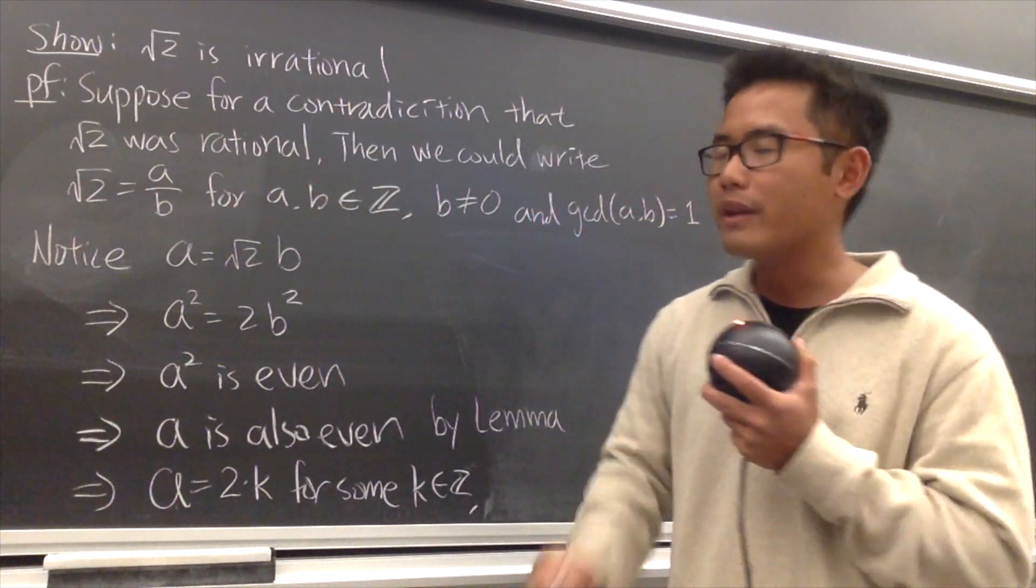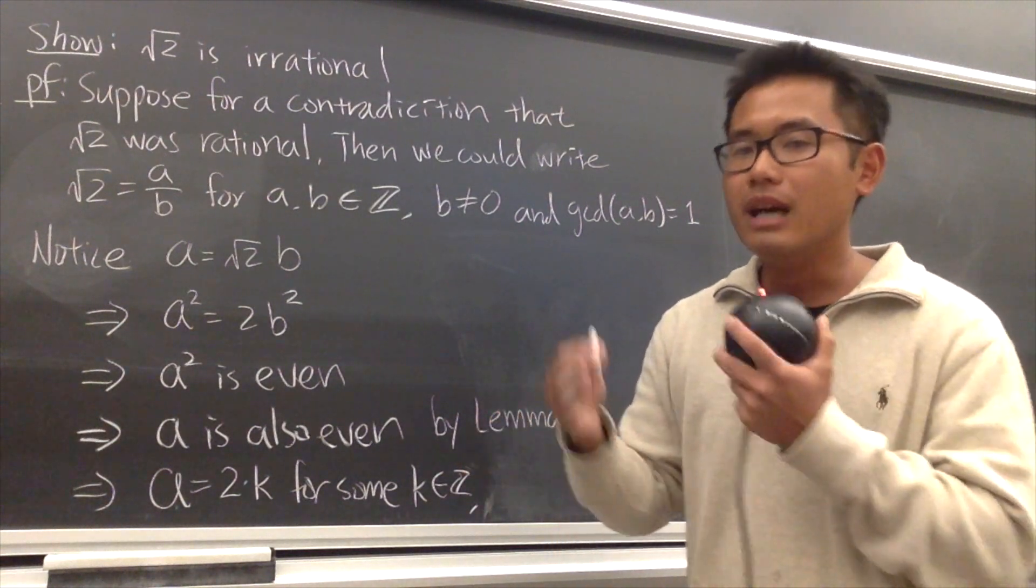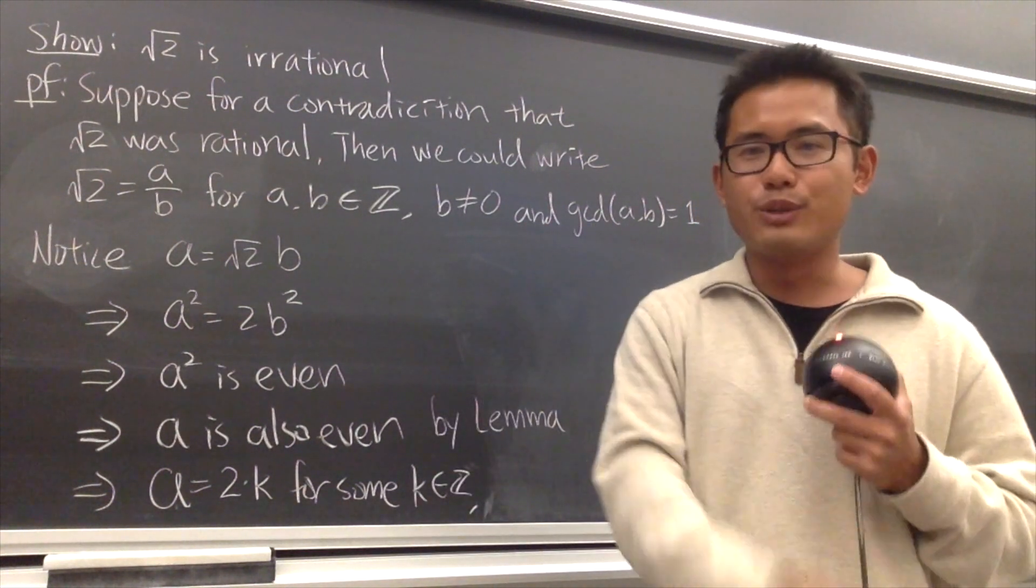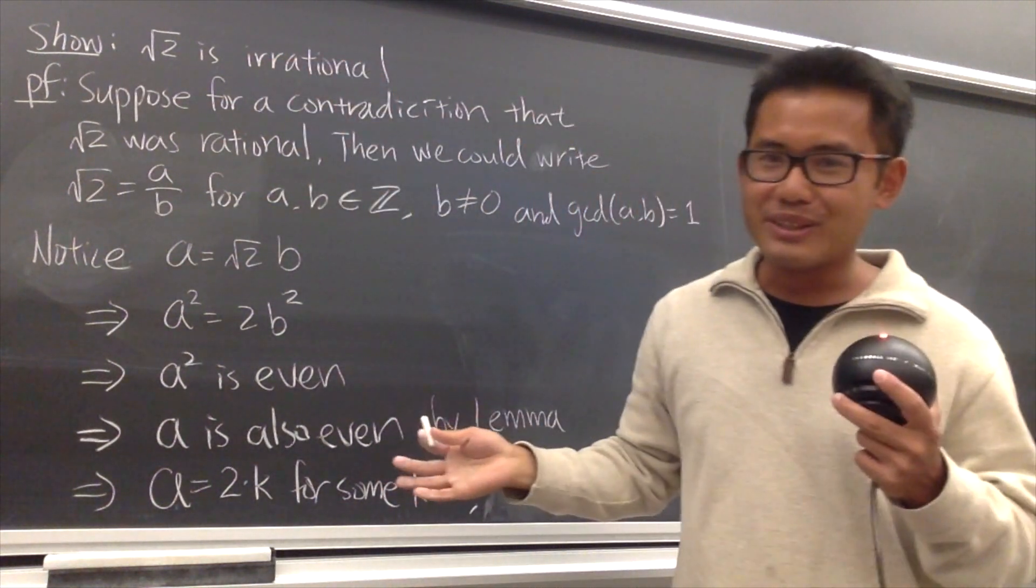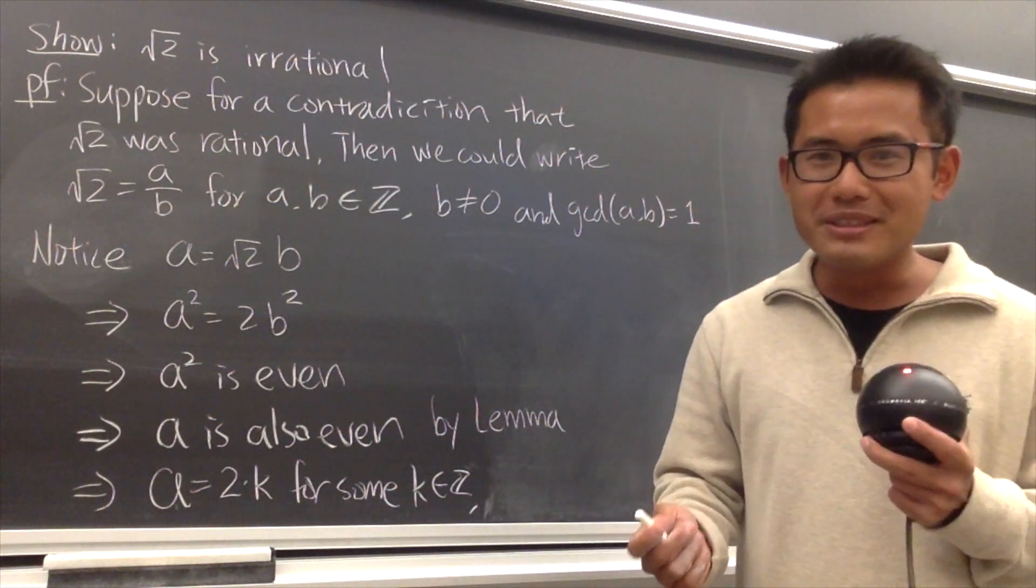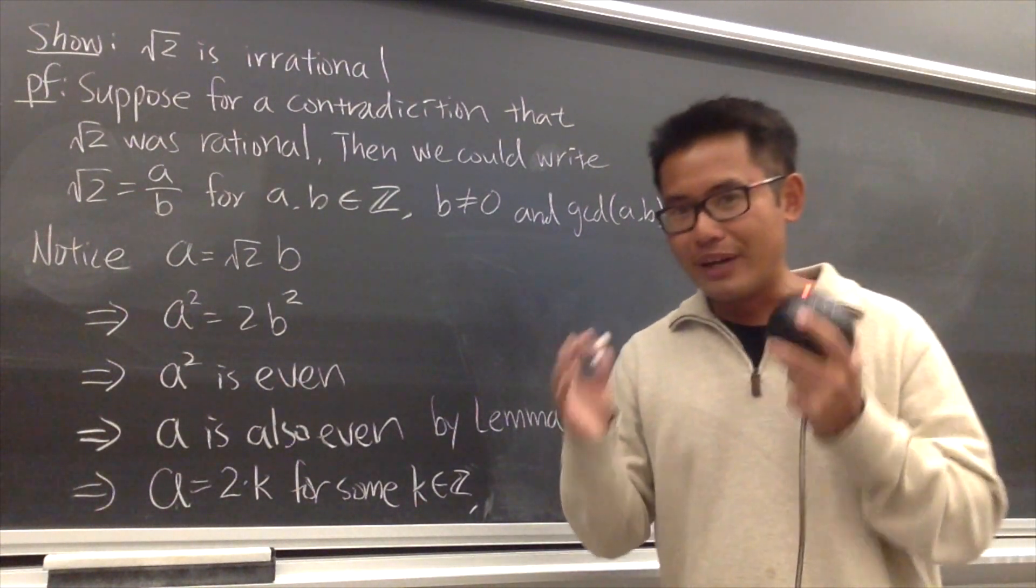First of all, we have to know what does the word irrational mean. That simply means that a number is not rational. Don't get me wrong - irrational means not rational. That's just how it is. And now the question is, what does it mean to have a rational number? We have to know the definition.